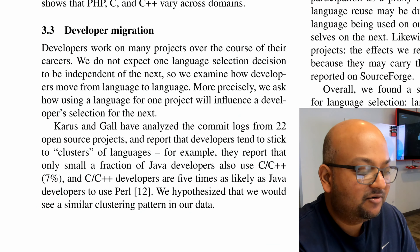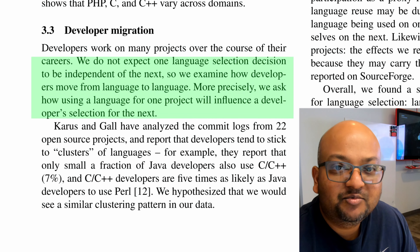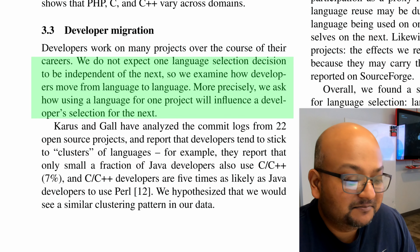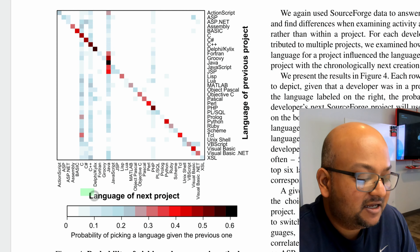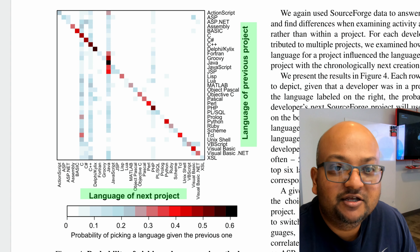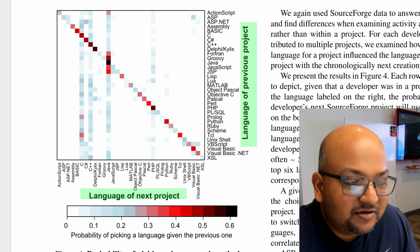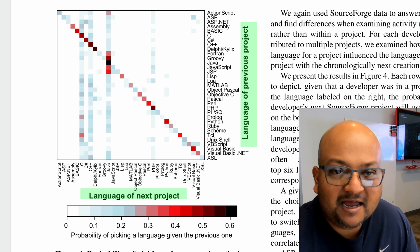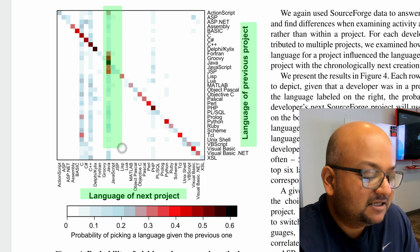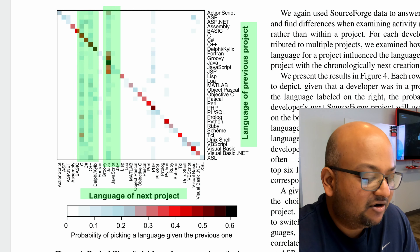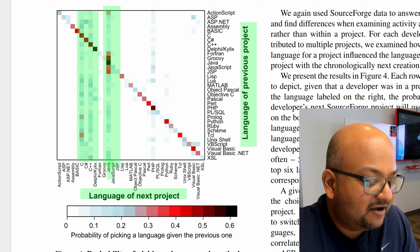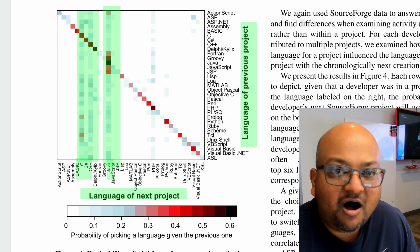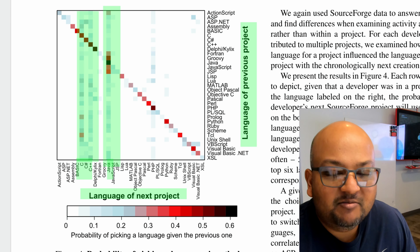Here's a more interesting question: how does a programmer pick the language for their next project based on the language they've already used? Here is a graph that shows the probability of picking a language given which language they used in their previous project. You can see a bright diagonal — that's not surprising because programmers tend to pick languages they've already used. But you'll also notice some bright vertical lines which correspond to popular languages like Java, C++, and C, showing that when developers move to a new language, they often end up picking one of the dominant popular languages.